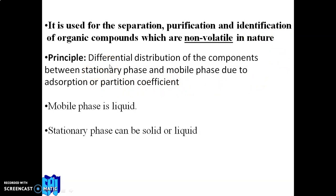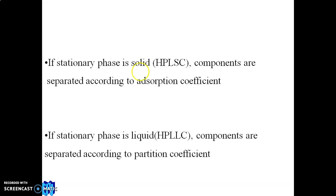The principle of HPLC is the differential distribution of components between the stationary phase and the mobile phase, due to differences in adsorption and partition coefficients. If the stationary phase is solid, components are separated according to adsorption coefficient. If the stationary phase is liquid, separation is based on differences in partition coefficient.